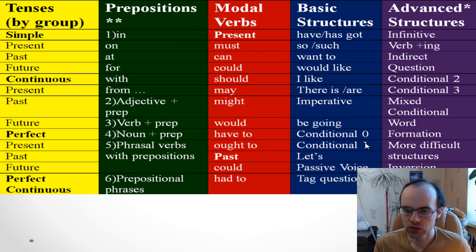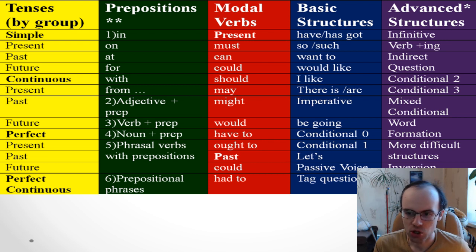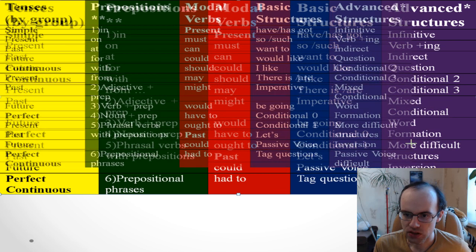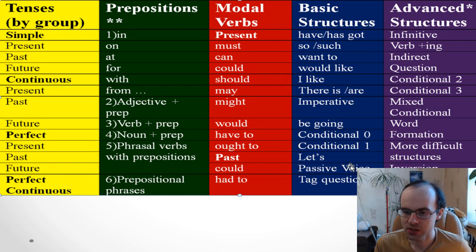You need to know that we don't use future simple after 'if' and 'when.' For example: 'I'll do it if I have free time' — not 'if I'll have free time.' Also learn: 'let's,' passive voice, and tag questions. Passive voice covers present simple, past simple, and future simple for intermediate; and continuous and perfect tenses for advanced structures.